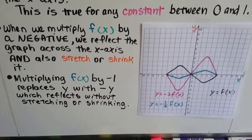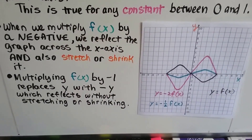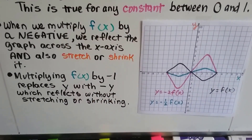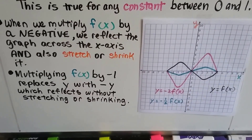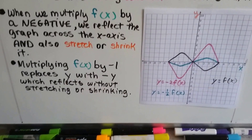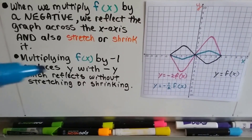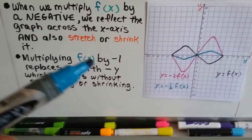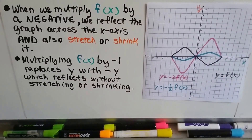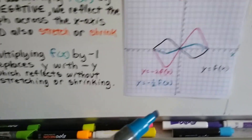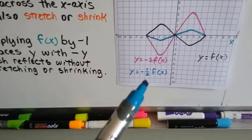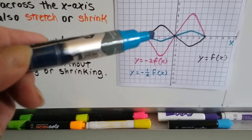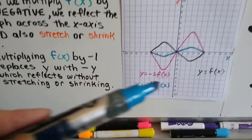When we multiply f(x) by a negative number, we reflect the graph across the x-axis and also stretch or shrink it. Multiplying f(x) by negative 1 will just replace y with negative y, which reflects it without stretching or shrinking. Here we've got y equals f(x), but here it's negative 2, and here it's negative half.